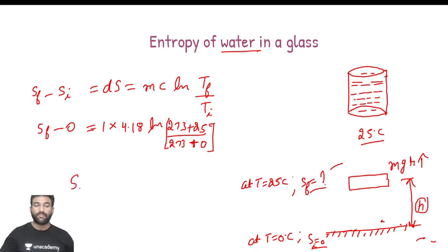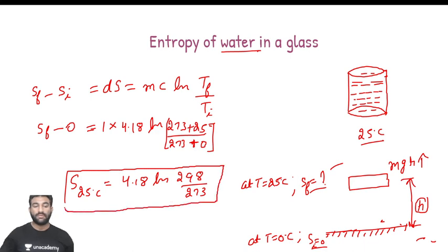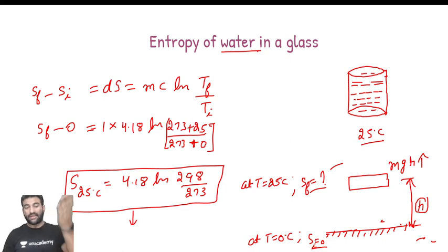So the final entropy - that is, entropy at 25 degree centigrade - is equal to 4.18 × log(298/273). In this way you can find out the entropy of the water placed in a glass at 25 degree centigrade. The units will be kilojoule per Kelvin, and the answer comes out when you simplify the logarithm.